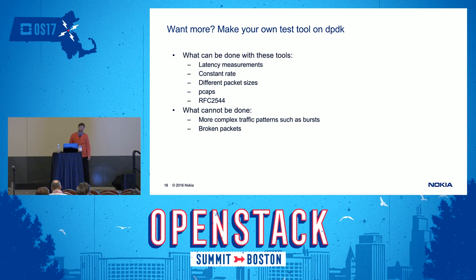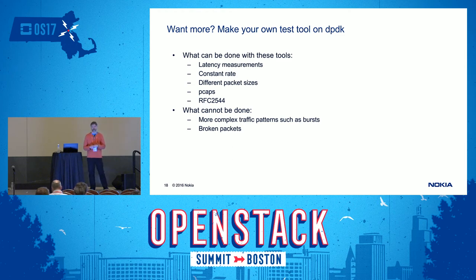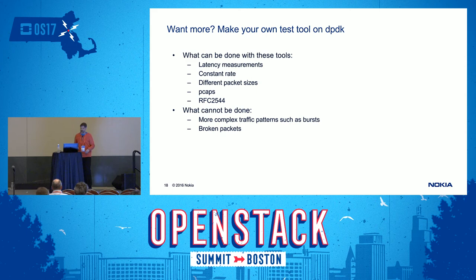What cannot be done as easily is testing more exotic traffic patterns — for example, sending a burst of packets at high rate, then a delay, then another burst. For that you should look at writing your own tool using DPDK directly. We have an internal tool like that and it's not a huge amount of code on top of DPDK. Also, injecting broken packets with wrong checksums to test performance under those conditions is not straightforward with these tools.